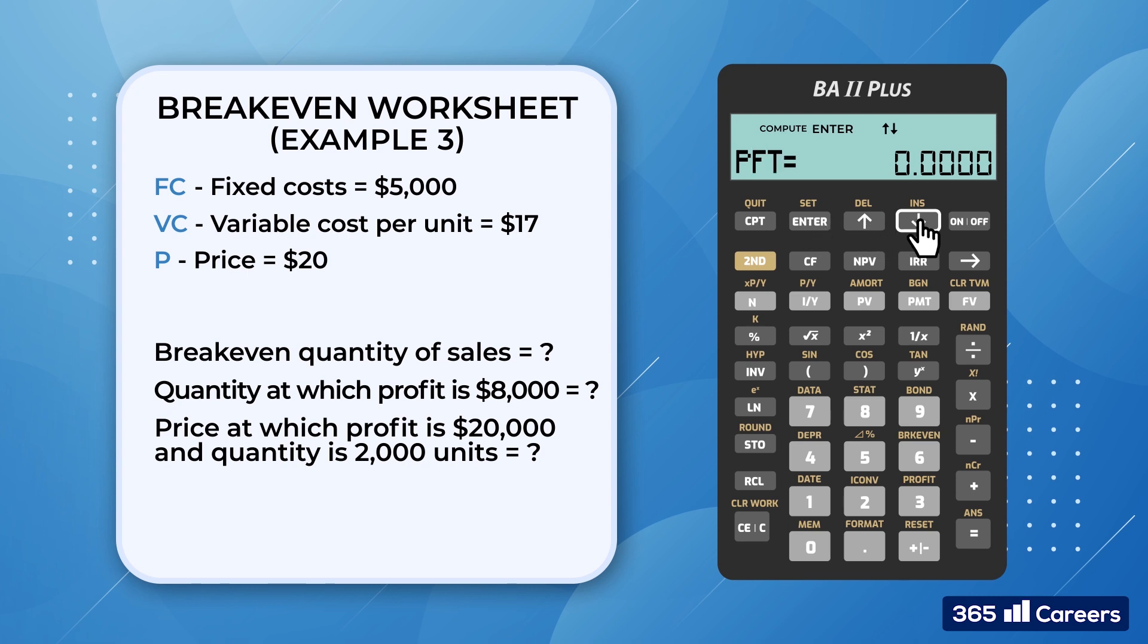Then we have PFT, which stands for profit. We would like to find the break-even quantity of sales. So, by definition, break-even is the number of units that the company must sell to have profits equal zero. The default value is zero, so we leave it as it is. The last term, Q, is what we don't know. Therefore we press Compute to obtain 1,667 units.